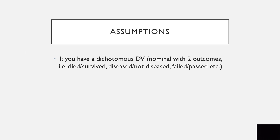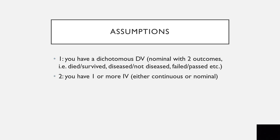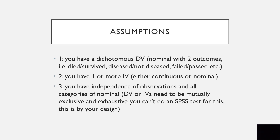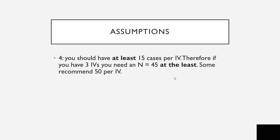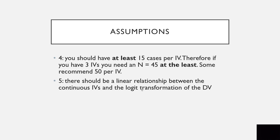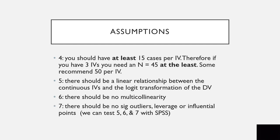There are quite a few assumptions. First, you must have a dichotomous outcome variable — nominal with two outcomes such as died or survived, diseased or not diseased, failed or passed. Second, you need one or more independent variables, independence of observations, and all categories of nominal variables must be mutually exclusive and exhaustive — this cannot be tested in SPSS, it is by design. Fourth, you should have at least 15 cases per independent variable, so three independent variables requires at least 45, with some recommending 50 per IV, meaning 150 cases. Fifth, there should be a linear relationship between continuous independent variables and the logit transformation of the dependent variable. Sixth, no multicollinearity. Seventh, no significant outliers, high leverage, or influential points — the last three can be tested in SPSS.